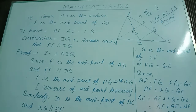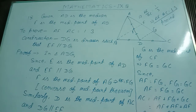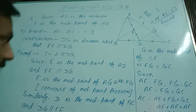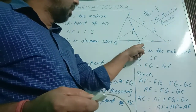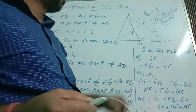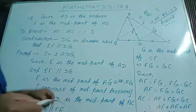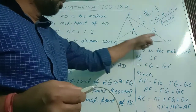Good morning students. Chapter midpoint is continued and in this video class let us see the solution of question number 18. Question number 18 states that AD is a median of side BC of triangle ABC and E is the midpoint of AD. BE is joined and produced to meet AC at F. Prove that AF is to AC equal to 1 is to 3. In this given question, ABC is the triangle, AD is the median, E is the midpoint of this median.